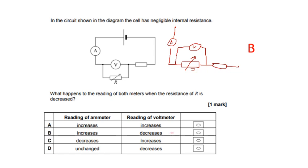So the voltmeter reading goes down. So it's either that one or that one. What will happen to the current? Well, the total resistance of the circuit is less, so the current will be bigger. So the current increases, so the answer is B. They're a bit sneaky, drawing the circuit differently like that. There you go. Don't panic.